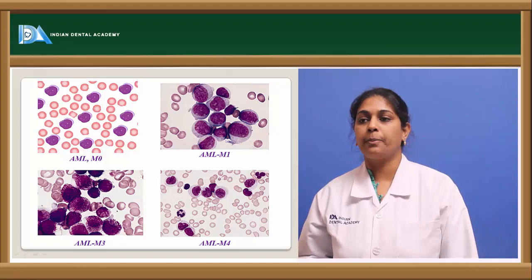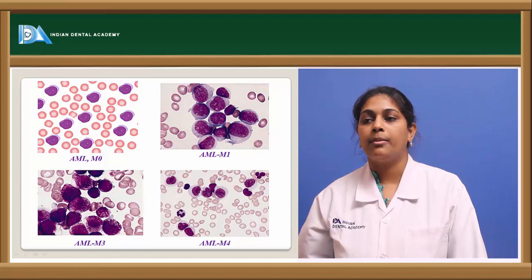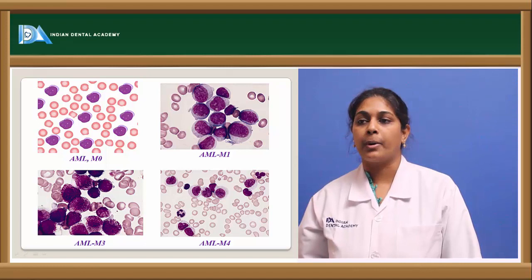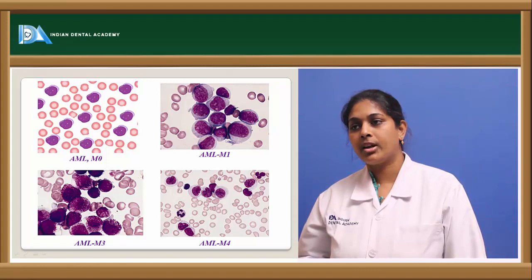Pictures showing AML include: the first showing M0 phase, then M1 phase, the third showing M3 phase, and the fourth showing M4 phase. These are laboratory-stained preparations used to identify and give proper grading based on the FAB classification.